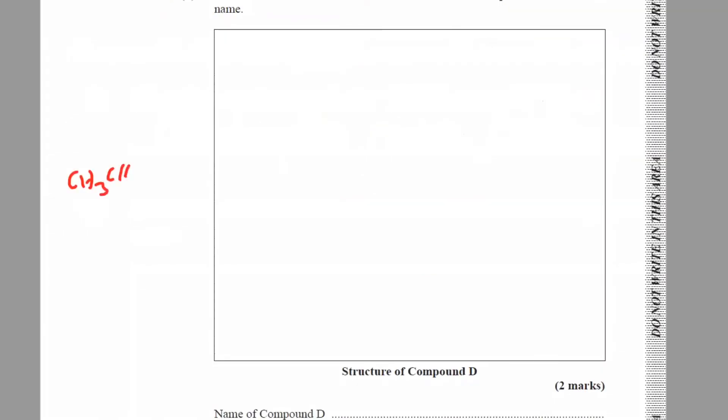Part two: Draw the fully displayed structural formula of compound D and write its name. So we have CH3CH2CH2COOH. So this would look like one, two, three, four carbons. Again, as usual, each carbon must be taking part in four bonds. Carbon is tetravalent.